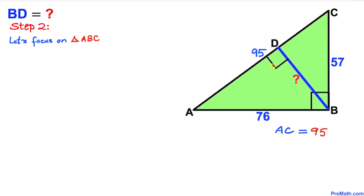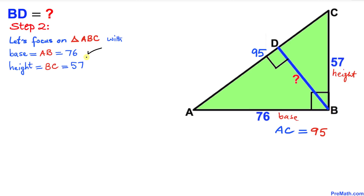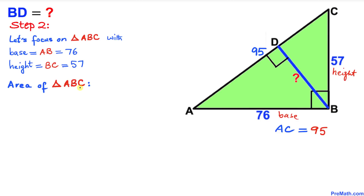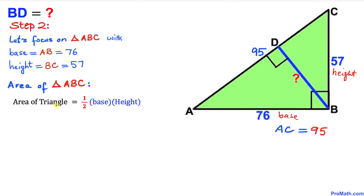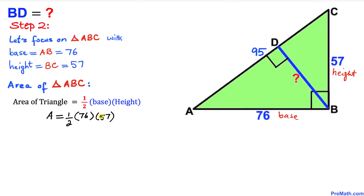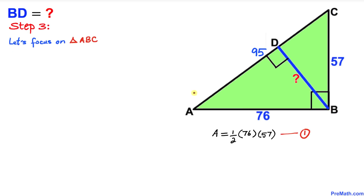Let's focus on triangle ABC with side AB as our base and BC as our height. Our base AB is 76 and our height is 57. Let's calculate the area of triangle ABC. The area of a triangle equals one half times base times height, so area A equals one half times 76 times 57. Let's call this equation number one.